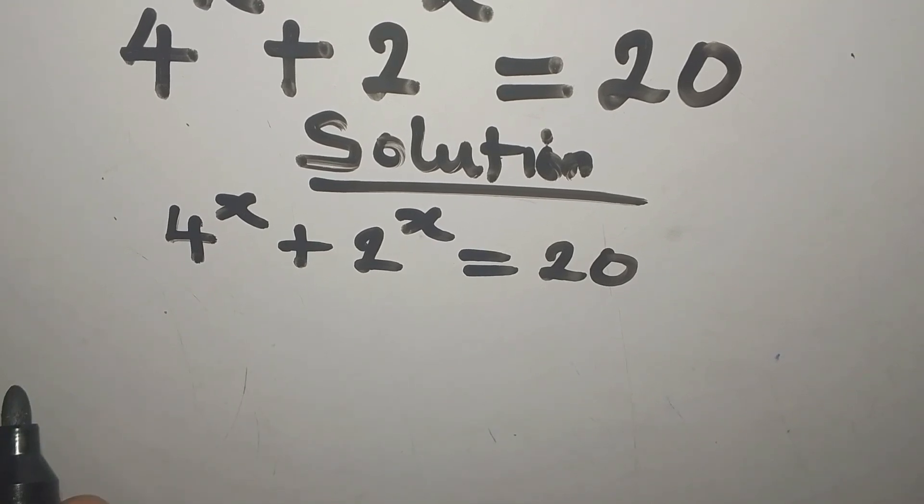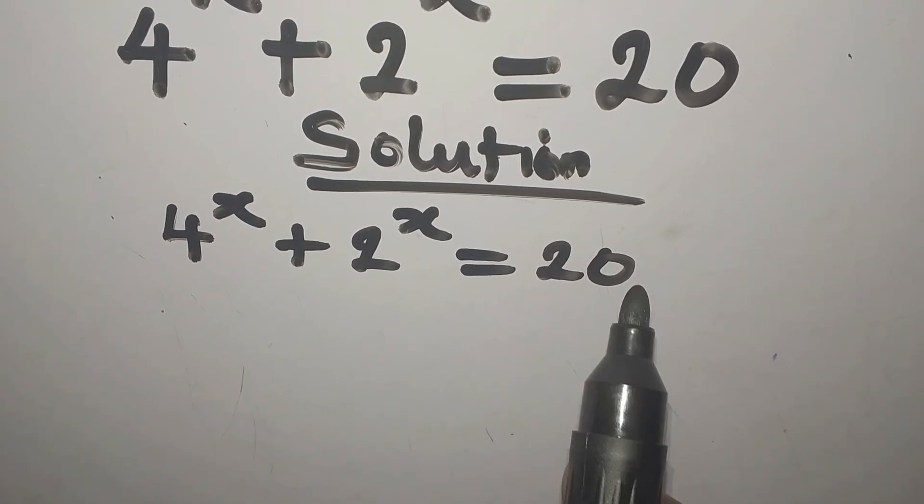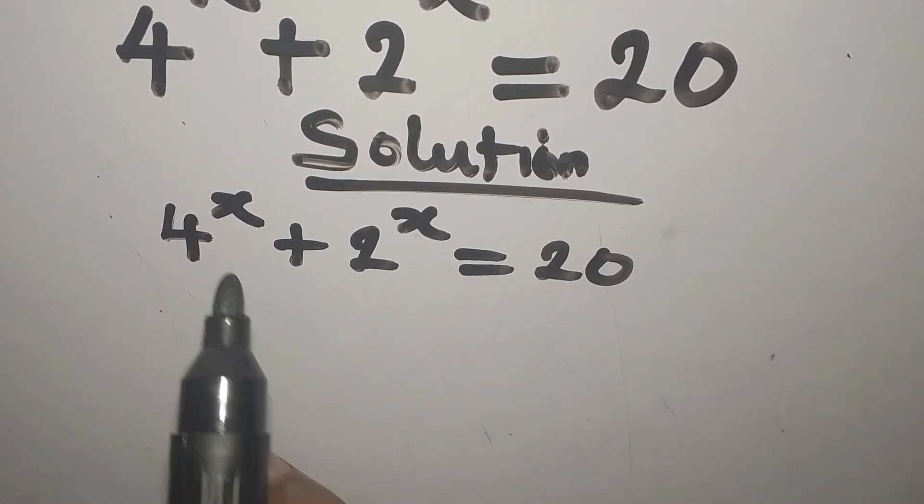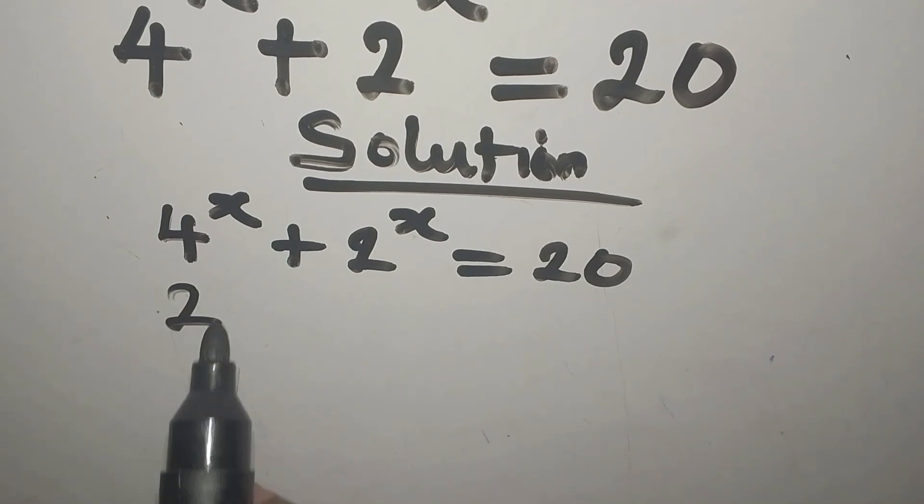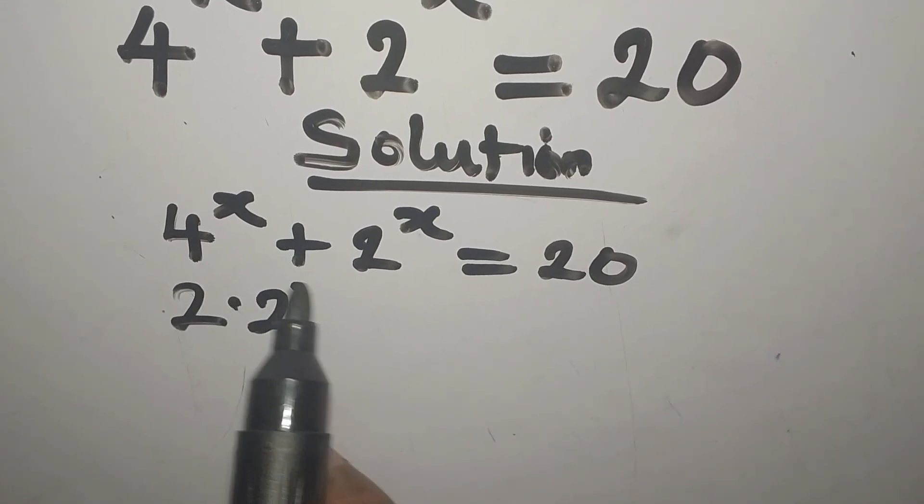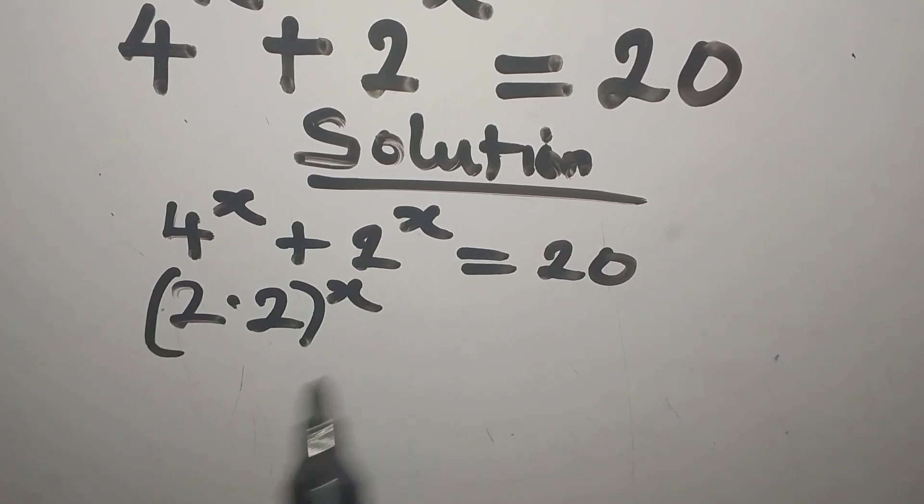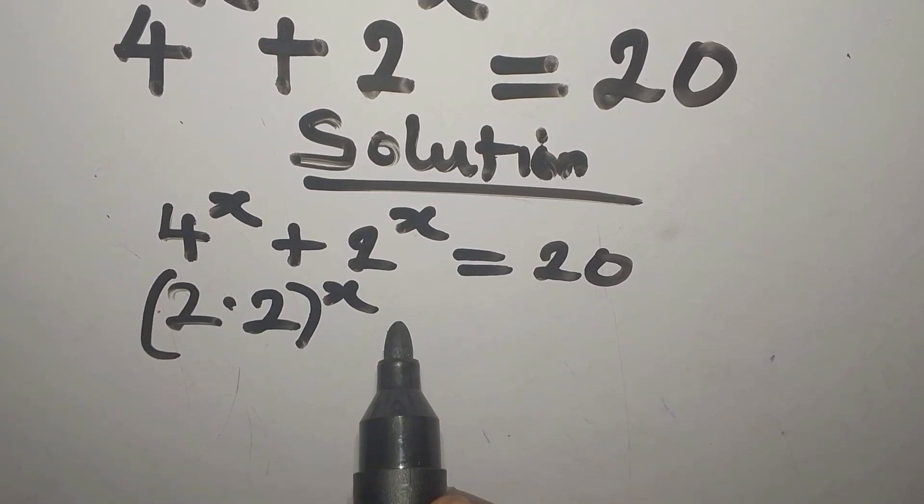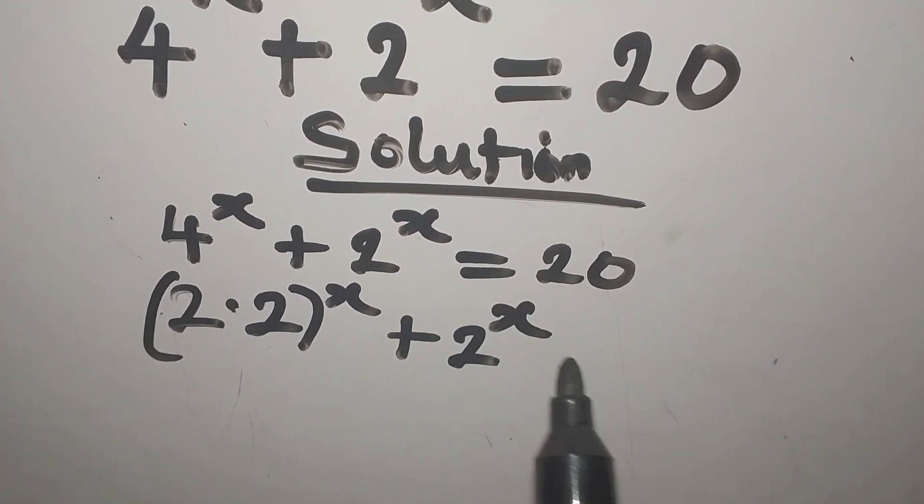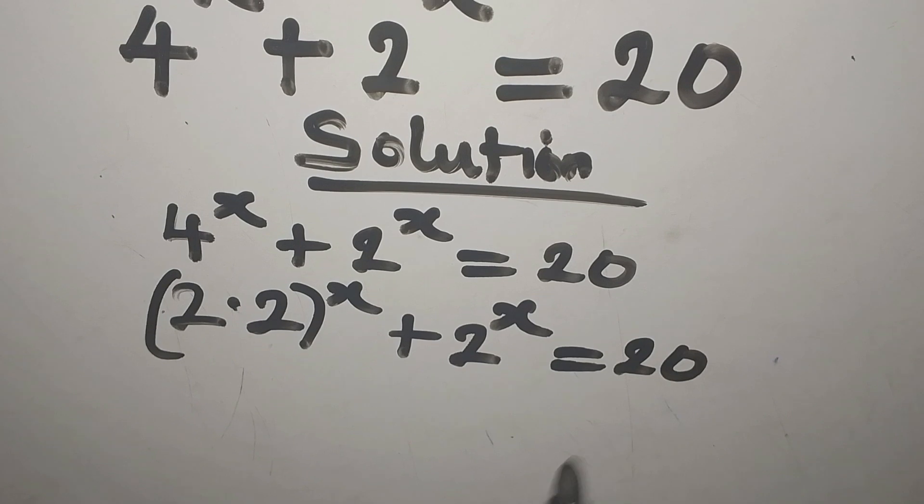So 4 to the power of x, 2 to the power of x, and 20. What do we do to them? 4 here is 2 times 2, so there'll be power of x on that, right? Then plus we have 2 to the power of x and this is 20.